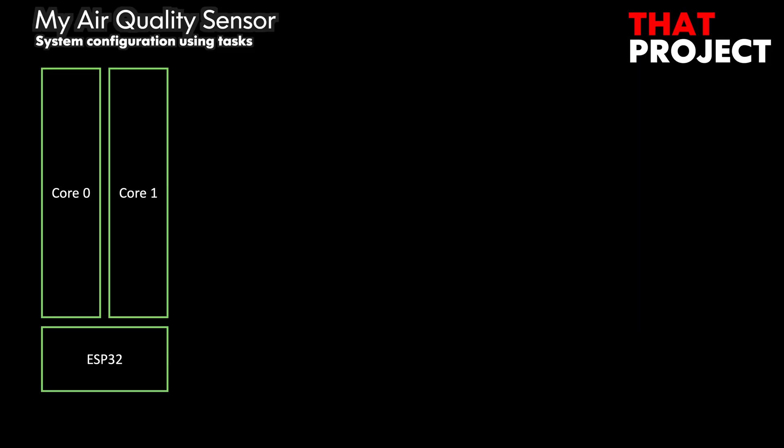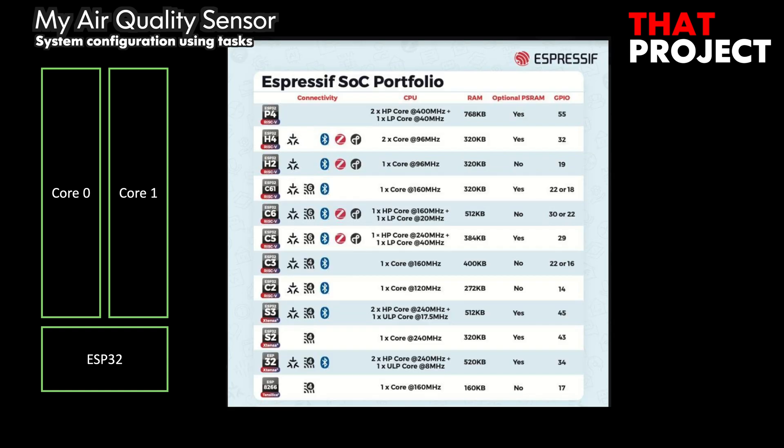Let's take a look at the key parts of this project. We need to do two main things: one is for AirVisual to continuously update the screen, and the other is to collect data through the connected sensor. Since the ESP32 has two cores, you can use the microcontroller more efficiently by assigning a specific task to each core. This varies depending on the series, so please check your MCU first.